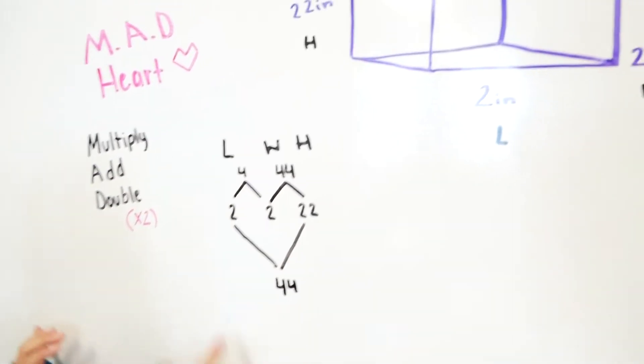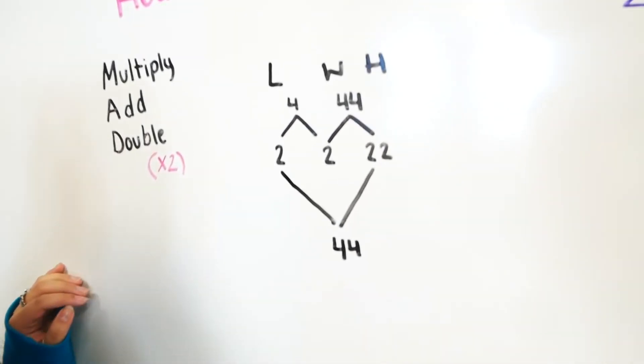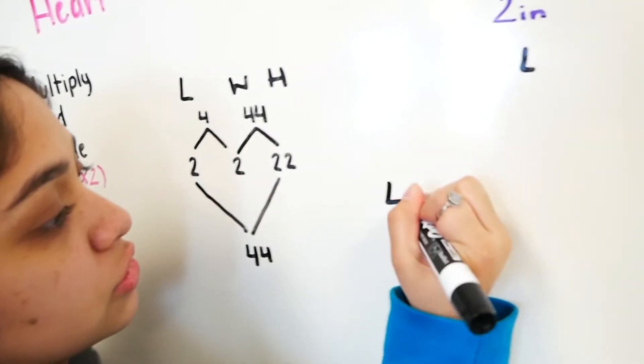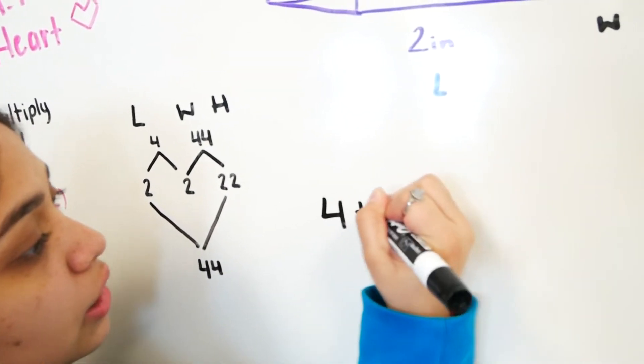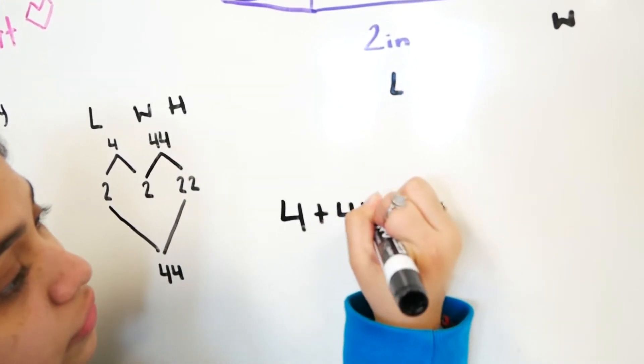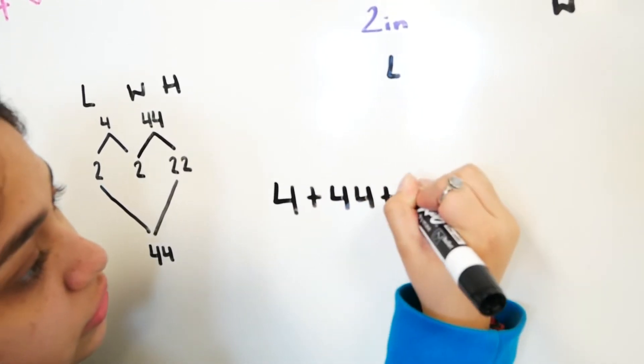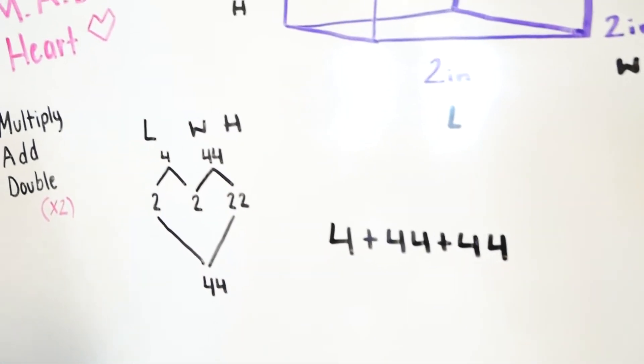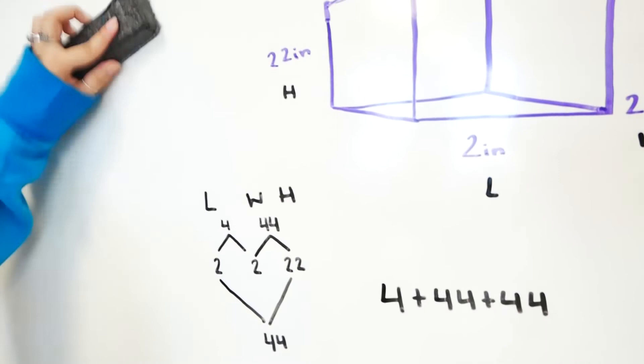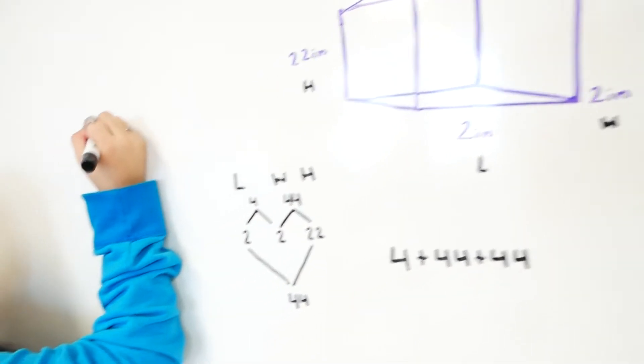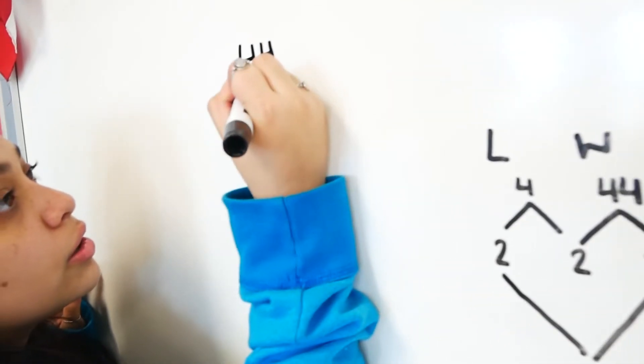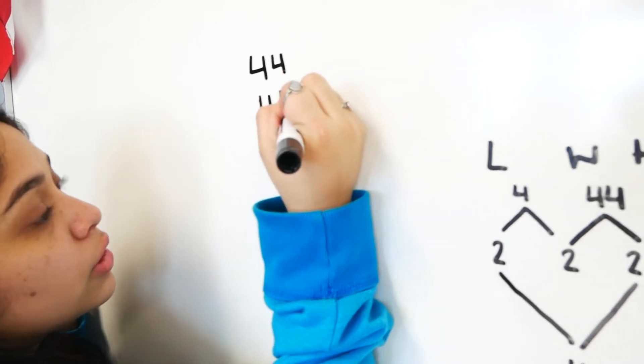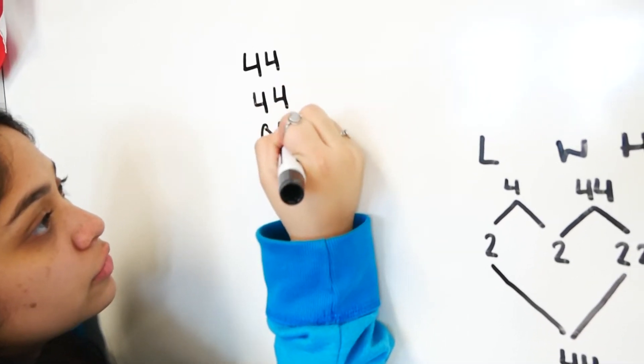Now that it looks like a heart, you're going to take your answers. 4 plus 44 plus 44. We're going to come back to that. And do 40, 4, 44, and 4.